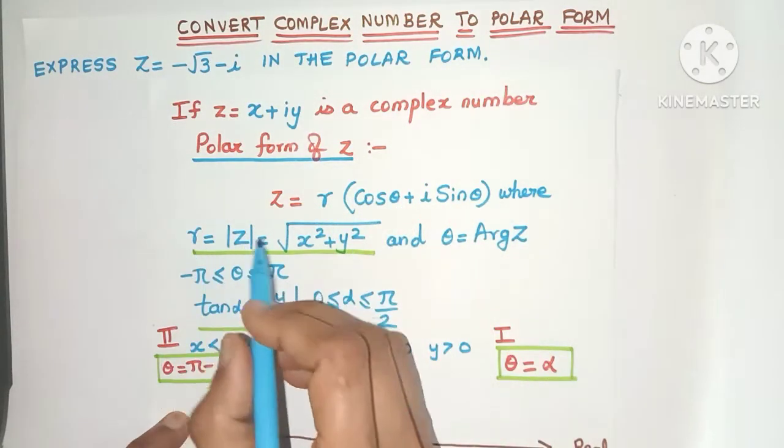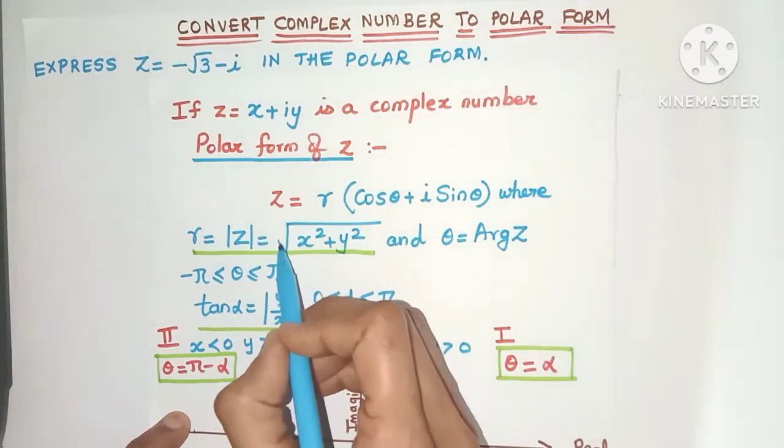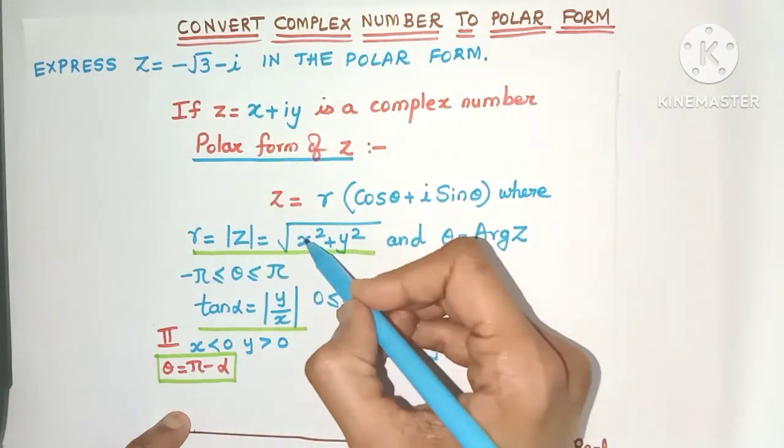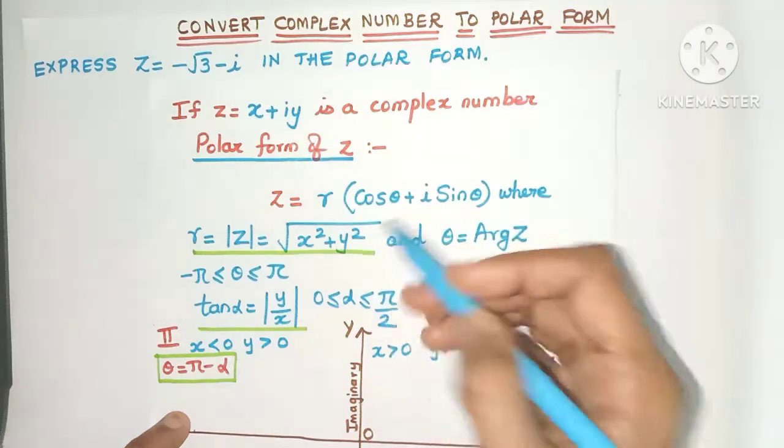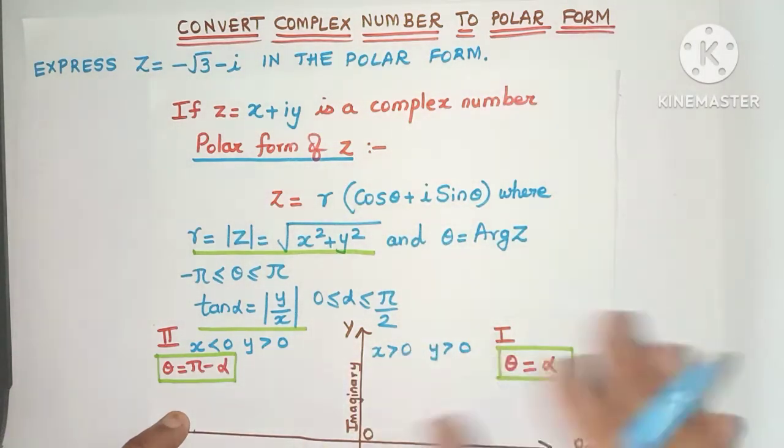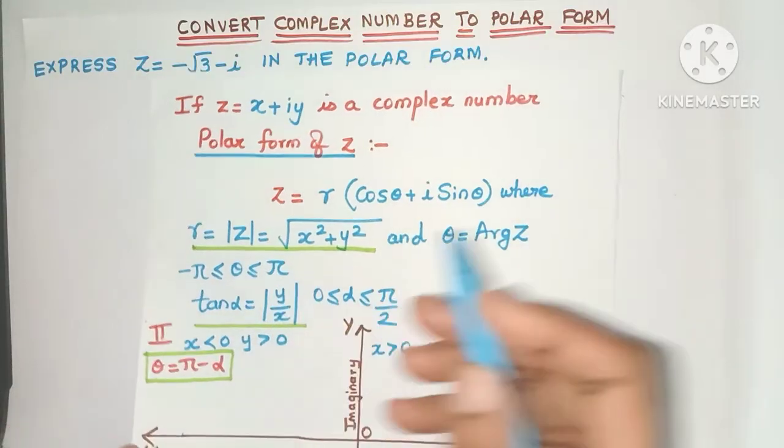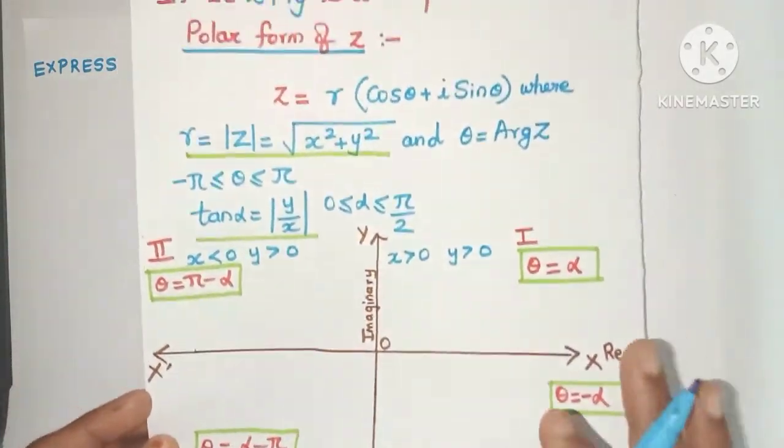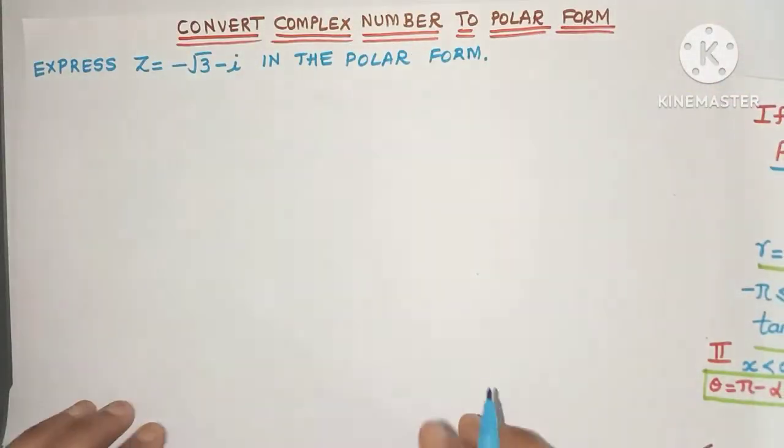Well r is known as the modulus of z and it is nothing but square root of x² plus y². And theta is known as the argument of z. It is any angle between -π to π and this is how you find out its value. So let's understand all this by doing this example.